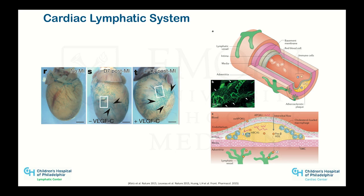There is data now showing that HDL and LDL particles are moving in plaques through the lymphatic duct. An article just out in Nature, done in mice, showed that if you induce lymphangiogenesis in infarcted areas, the region of scar will be diminished. Part of scar formation during myocardial infarction is edema and inflammation, and the lymphatic system is responsible for modulating that.